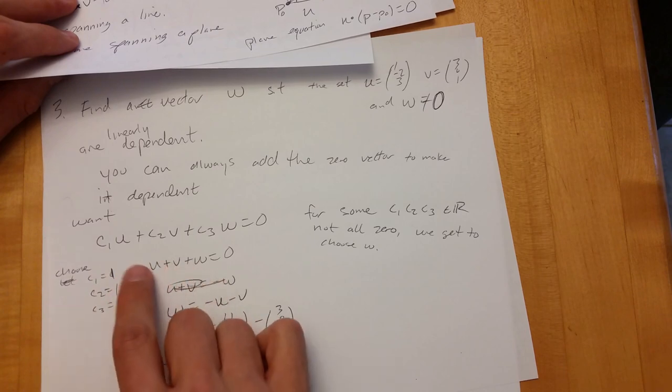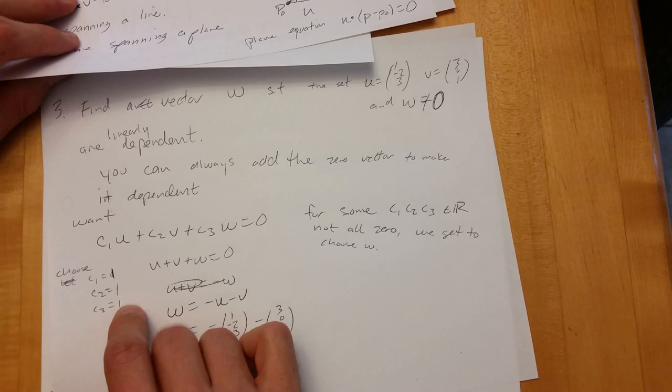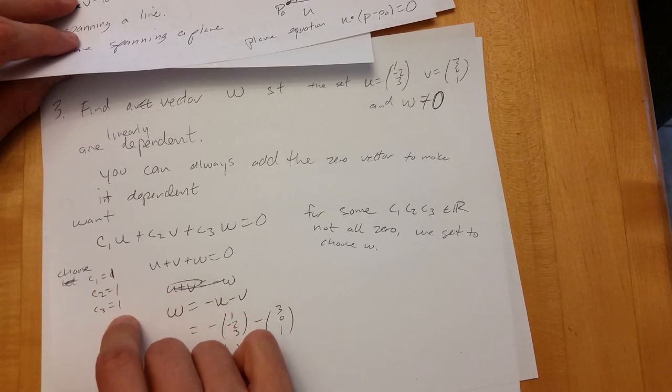So to get something fundamentally different, I'd have to go like one, two, one or negative one, one, one. I need a different combination of numbers.